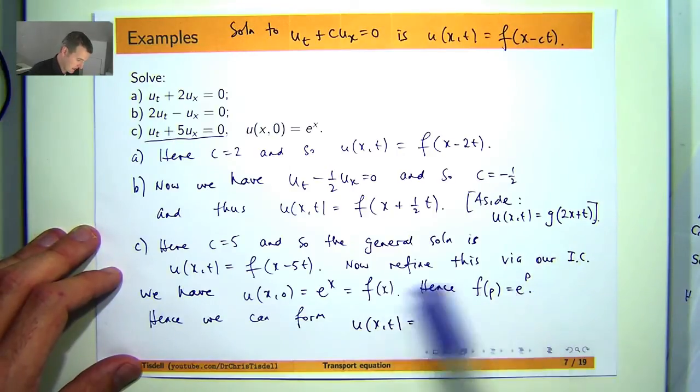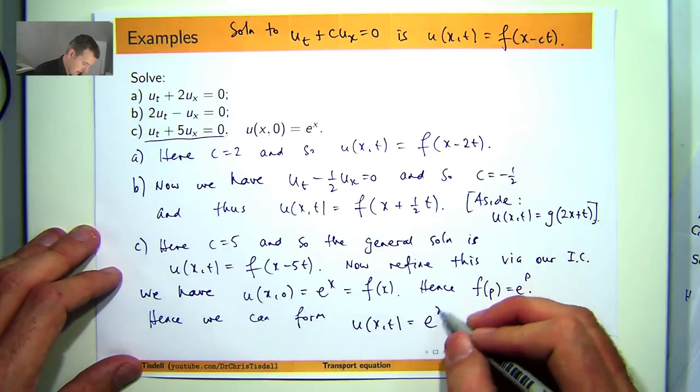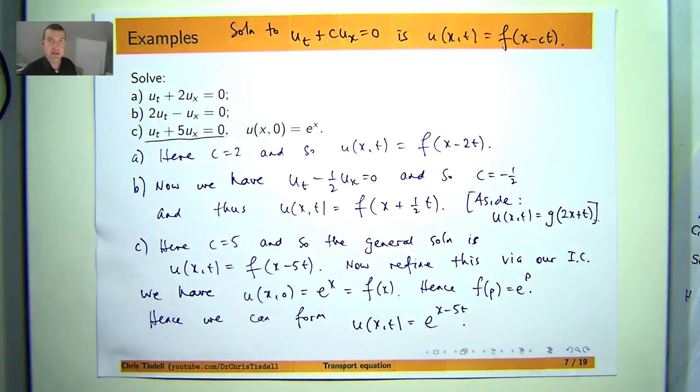change our argument with x minus 5t and we've got our solution to the Cauchy problem. So it will be e to this argument here and we're done.